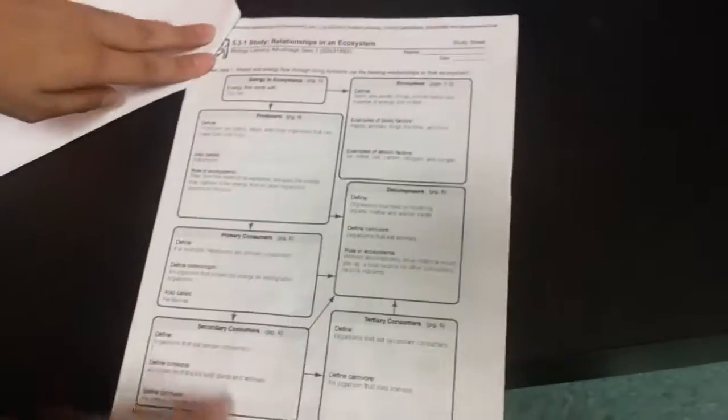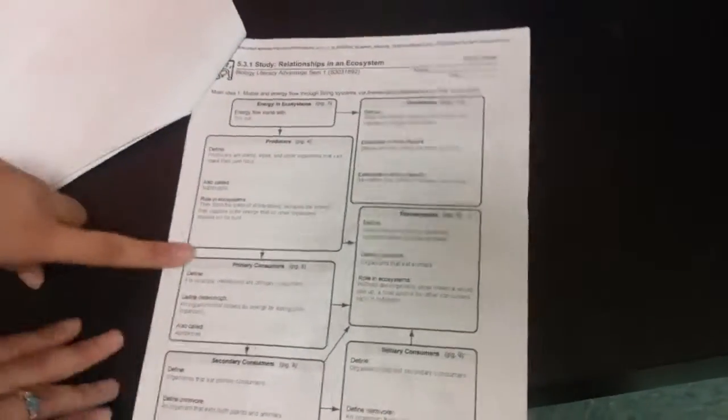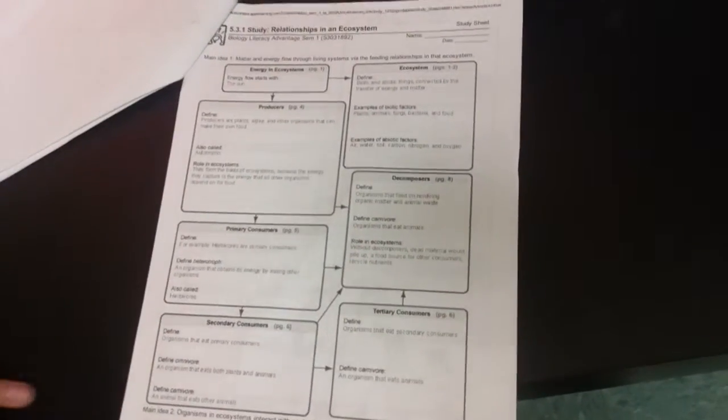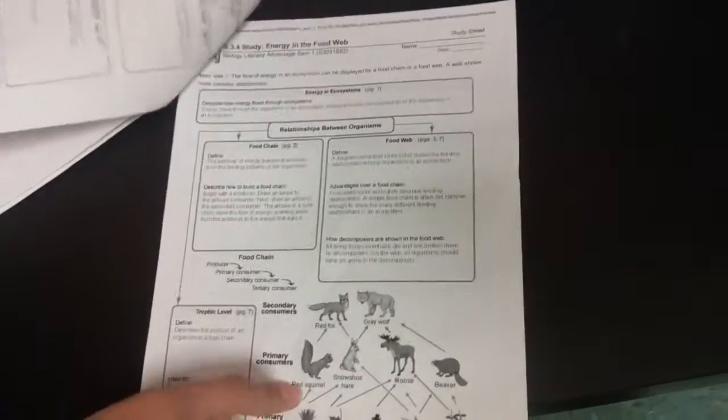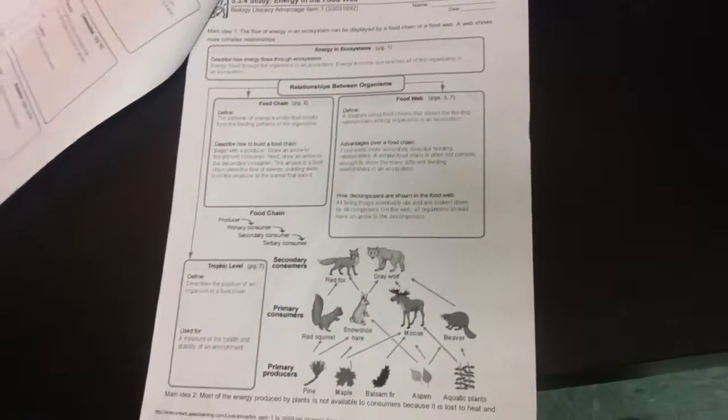And then this was notes to follow with it. So it gave me the definition of the producers, the primary consumers, everything that I needed to know I got from here. And it showed me an example of a food web. Excellent.